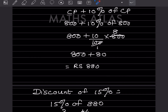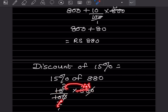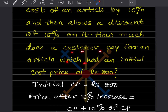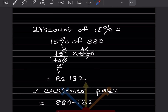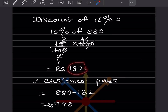Then a discount of 15 percent is allowed on 880. So 15 percent of 880 is 15 by 100 into 880, which equals 132. The customer pays 880 minus 132, which is rupees 748. The customer pays rupees 748 for the article.